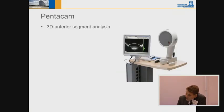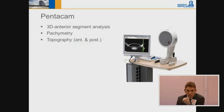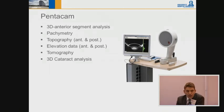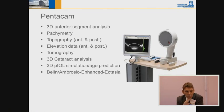Here is the Pentacam device. It is a 3D anterior segment analyzer. It has pachymetry data built in, so you don't need a separate pachymetry device. It takes topography — anterior and posterior measurements of the cornea — elevation data maps, anterior and posterior, and tomography. Additionally, it provides a 3D analysis of the lens, allowing us to see the lens structure and cataract formation.